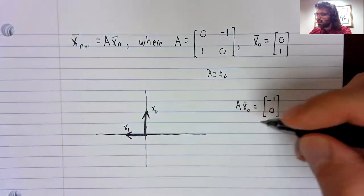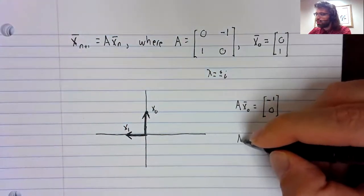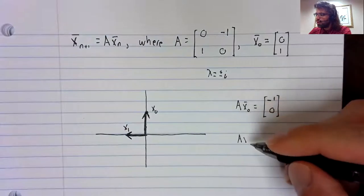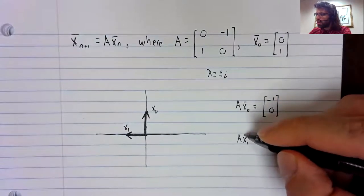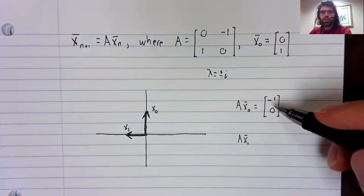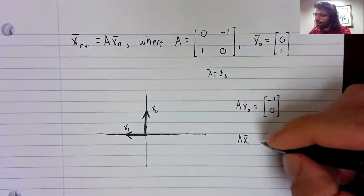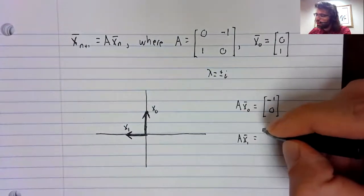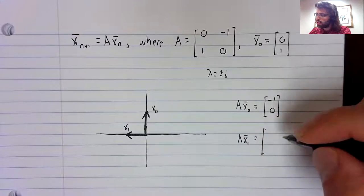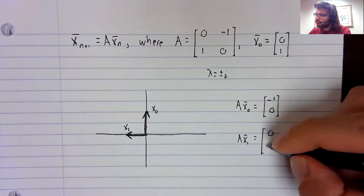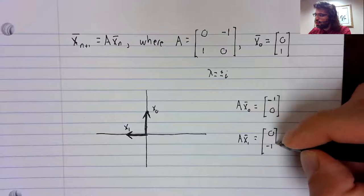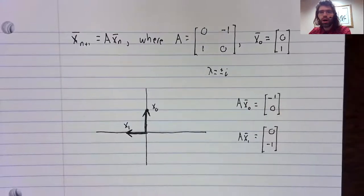To get X₂, we multiply X₁ by A. And that product is zero, negative one.